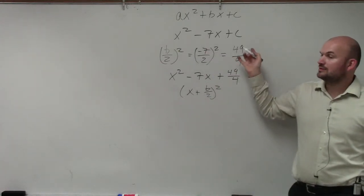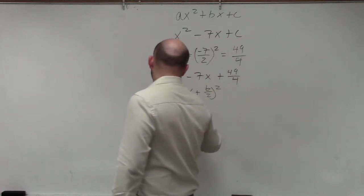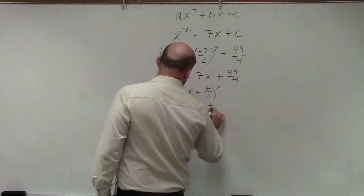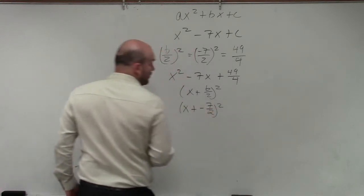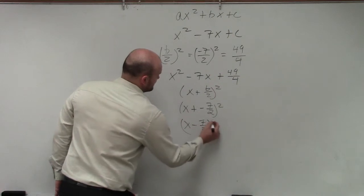Nope, that's the squared part. Just b divided by 2 is negative 7 over 2. So it's x plus negative 7 halves squared, or we can just write that as x minus 7 halves squared.